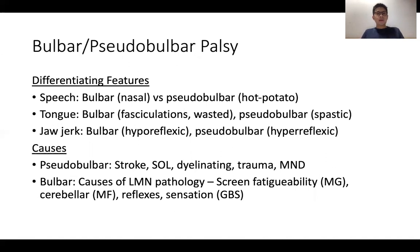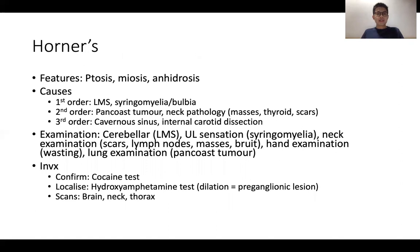Bulbar palsy is the lower motor neuron version of lower cranial nerve palsies, and pseudobulbar palsy is the upper motor neuron manifestation. Their respective causes and features are listed. Horner's syndrome: it's important to identify its features, classify causes based on the level of the lesion, and conduct a physical examination looking for associated features — neurological or non-neurological such as scars and lymph nodes — to narrow your differentials. Investigations to confirm, localize, and characterize the cause of Horner's are also outlined.